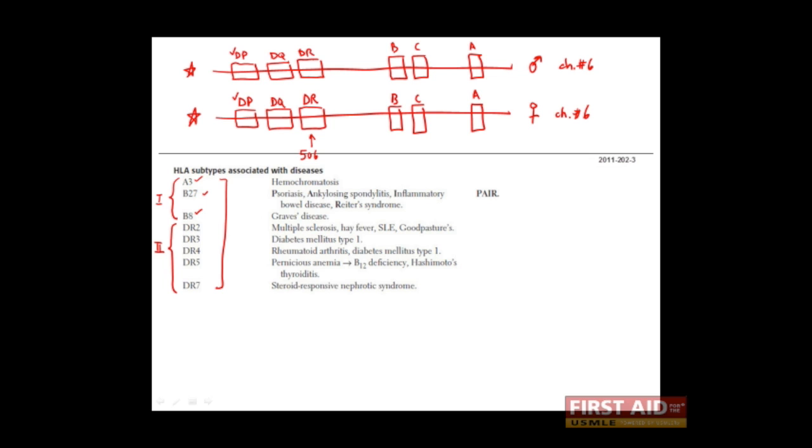For example, let's say that you inherited the variant DR number 7 from your mom. So here you would have DR number 7. And let's say from your dad that you inherited the DR allelic variant number 2. That is, you have DR number 2 here. That's actually not very good because that puts you at risk for, as you see here, multiple sclerosis, hay fever, lupus, and good pastures. And because you have DR7 from your mom, this puts you at risk for steroid responsive nephrotic syndrome.